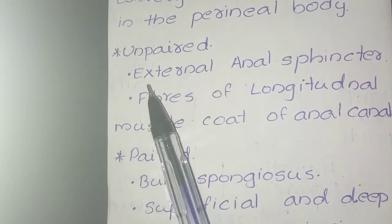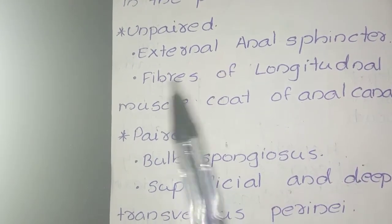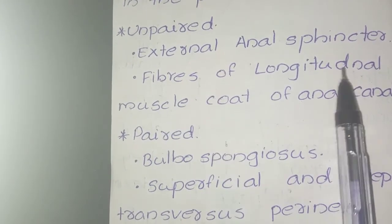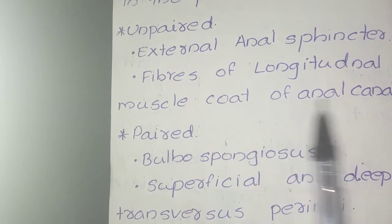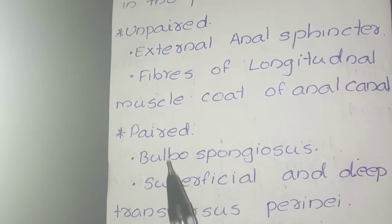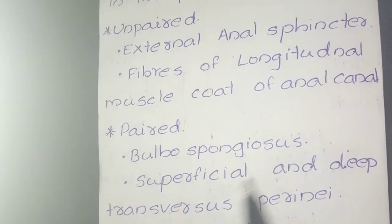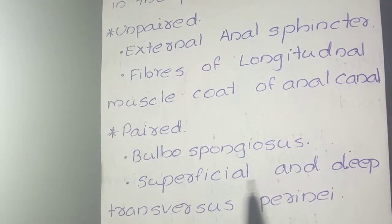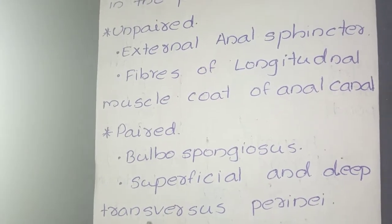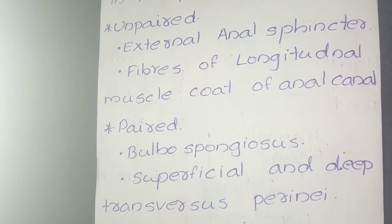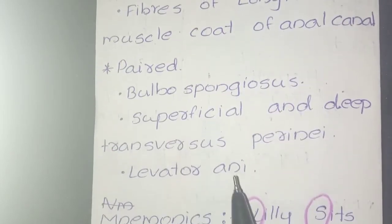The unpaired muscles include the external anal sphincter and the fibers of the longitudinal muscle cord of the anal canal. The paired muscles include the bulbospongiosus, superficial and deep transverse perineae, and levator ani.